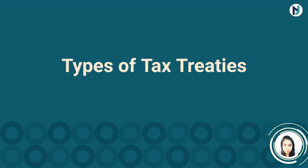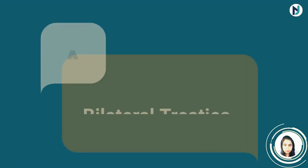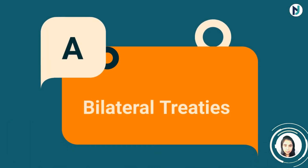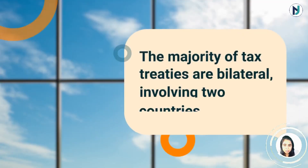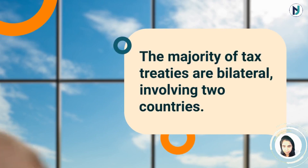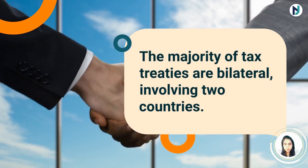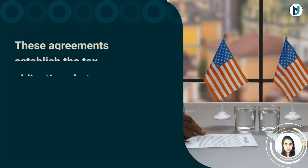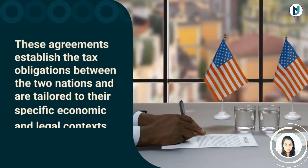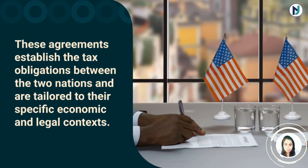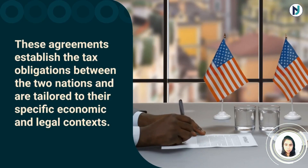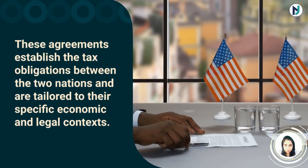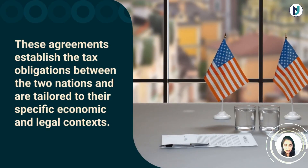Types of Tax Treaties — Bilateral Treaties. The majority of tax treaties are bilateral, involving two countries. These agreements establish the tax obligations between two nations and are tailored to their specific economic and legal contexts.